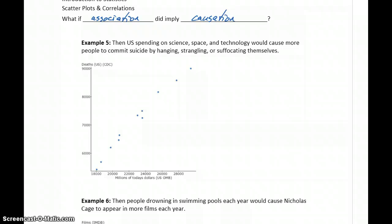For instance, that would mean that in our first example, U.S. spending on science, space, and technology would cause more people to commit suicide by hanging, strangling, or suffocating themselves. The correlation coefficient is 0.9921. But it doesn't really make any practical sense that the amount we spend on those areas has any effect on the number of people who commit suicide.